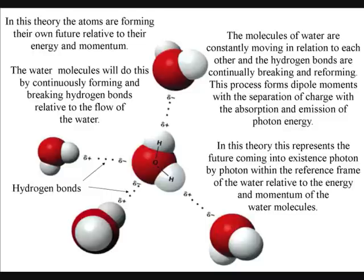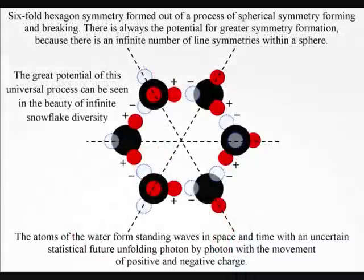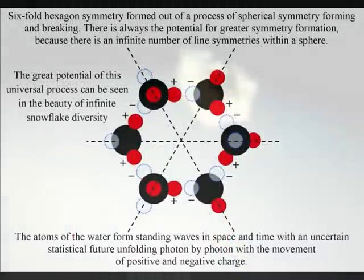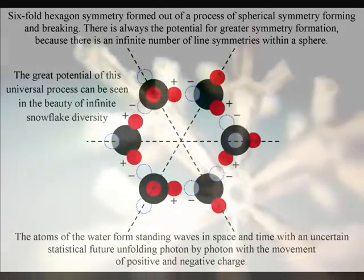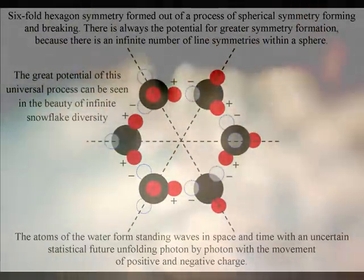In this theory, this represents the future unfolding photon by photon within the water. Just a change in environmental temperature can cause the atoms to bond together, with the process forming degrees of freedom and uncertainty needed for infinite snowflake diversity.